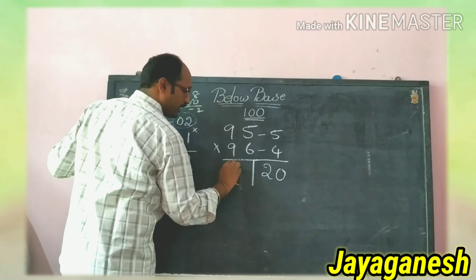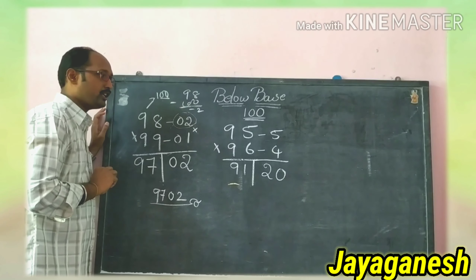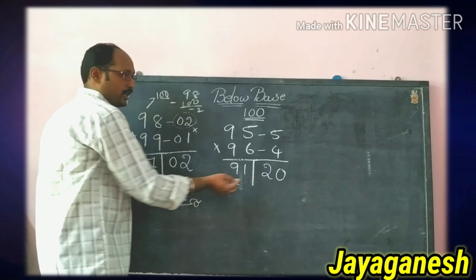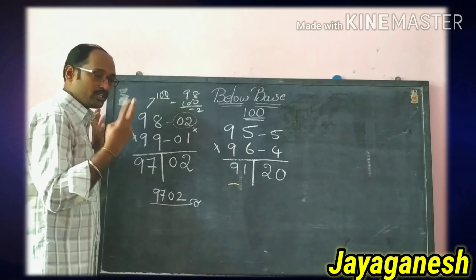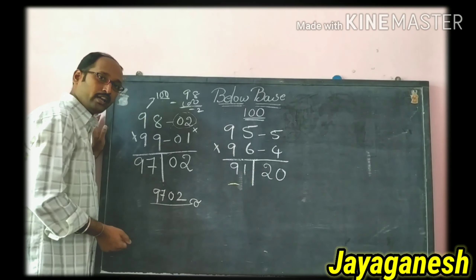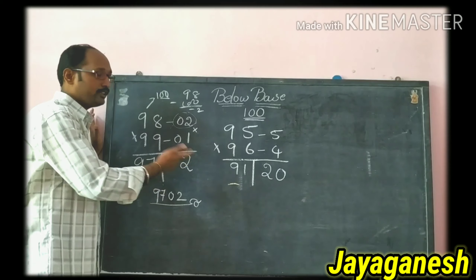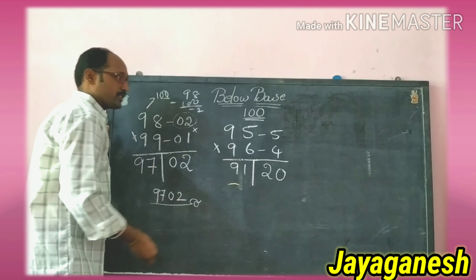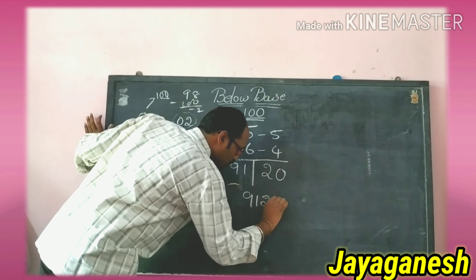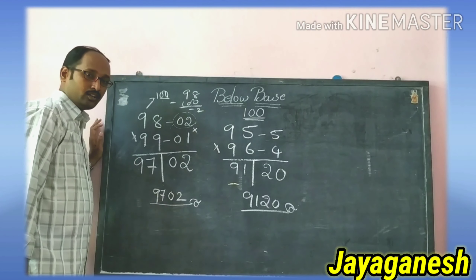For the left side, 95 minus 4 or 96 minus 5 gives 91. The right side answer should be 2 digits — it is already 20, which is 2 digits, so no need to prefix any zero. Write directly: the answer is 9120.